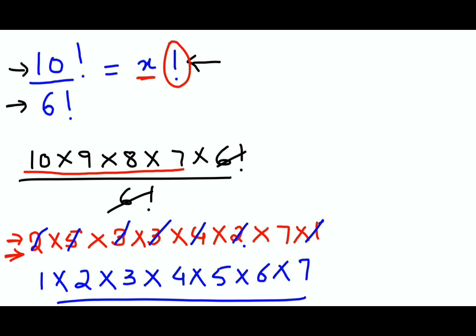So now this my dear friends is the expansion of 7 factorial which is equals to x factorial. Therefore, I can say the value of x is nothing but just 7 for this particular question. That's it for today. I will see you in the next video.